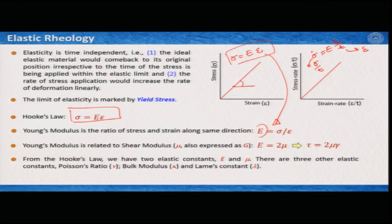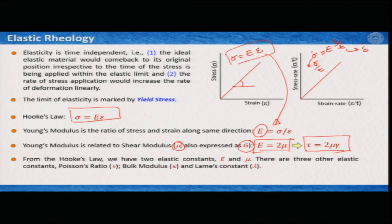You can replace Young's modulus by another constant called shear modulus. If you shear this elastic material instead of extending it, then this is known as mu, and sometimes also expressed as G. You can equate Young's modulus equal to twice the shear modulus, and then Hooke's law takes the shape of tau equal to 2 mu gamma, where tau is shear stress, mu is shear modulus, and gamma is your shear strain.